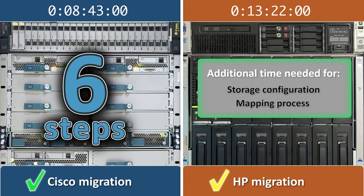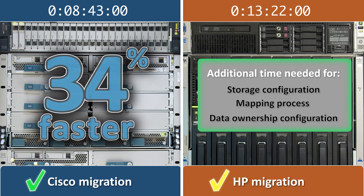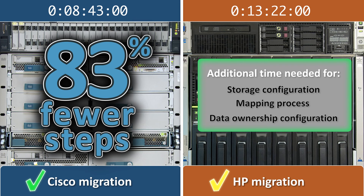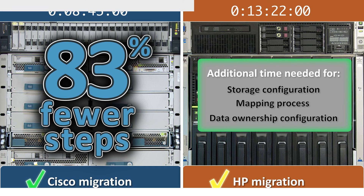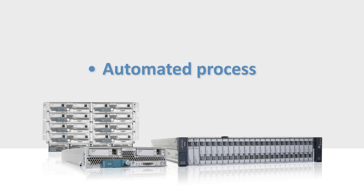It also leaves out the steps and time required to configure the server's data ownership. Until this step is complete, the old server's data will be unavailable to the new server. Even without the data ownership transfer factored into HP's total time, the Cisco UCS solution was 34% faster and required 83% fewer steps. The UCS solution is fully automated and does not require any additional actions or interaction with the storage for a full and complete server migration.